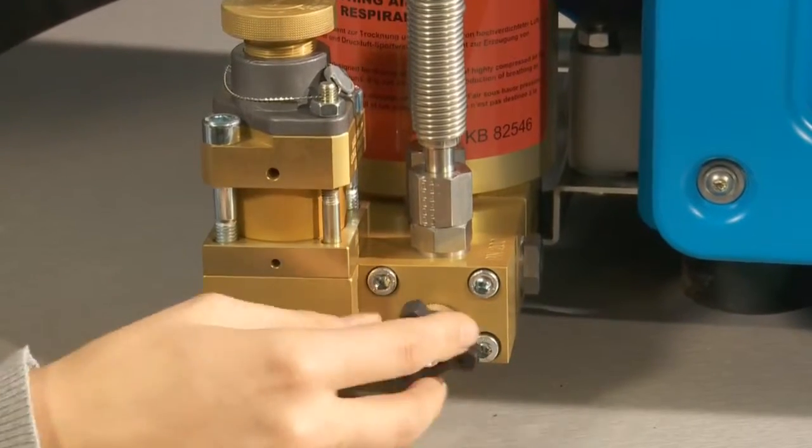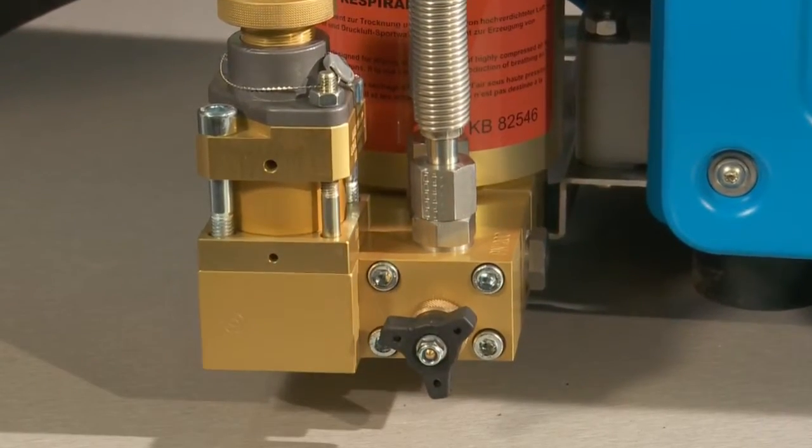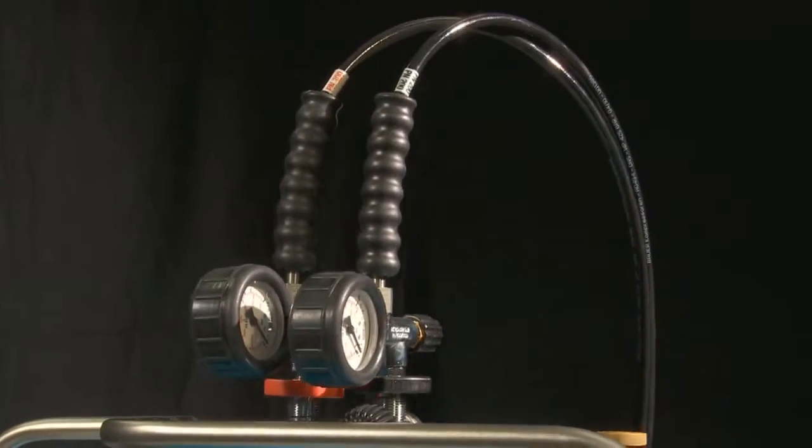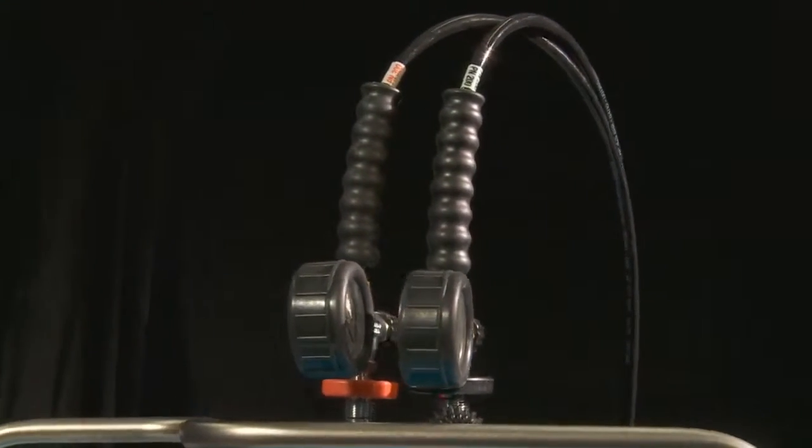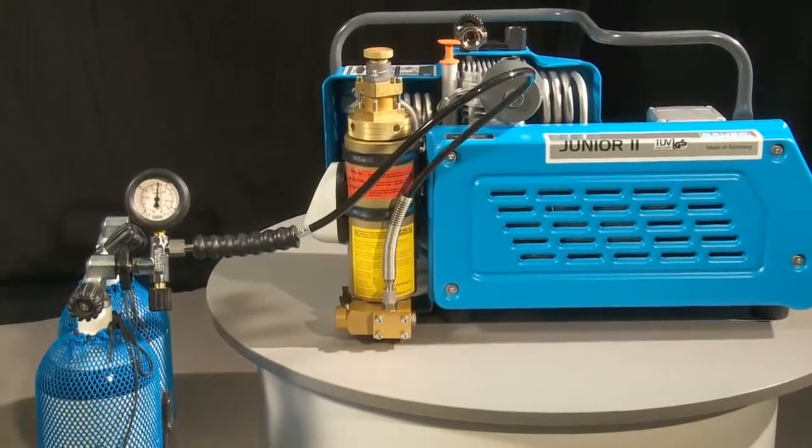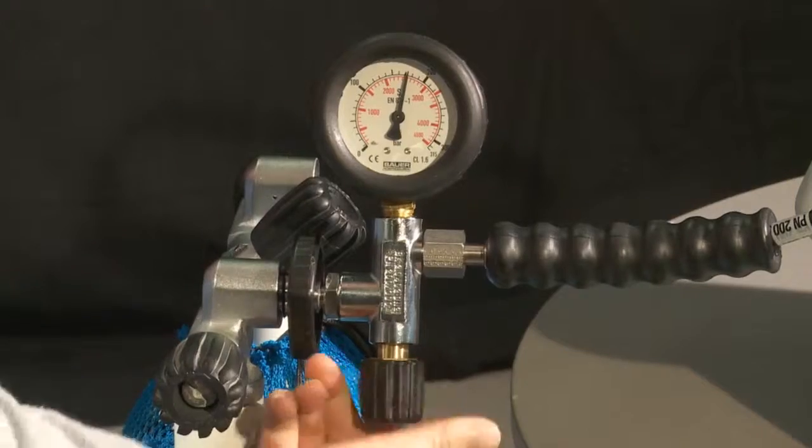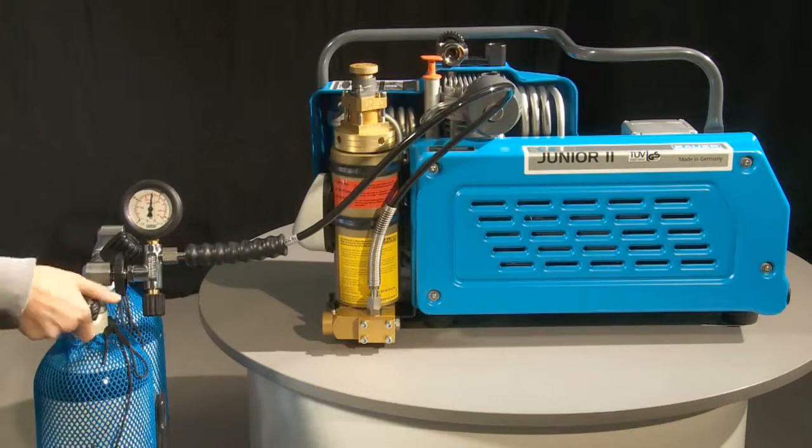The optional changeover device enables the filling pressure to be flexibly changed up and down between 200 bar and 300 bar. The filling valves are self-venting. These features allow breathing air cylinders to be filled in no time.